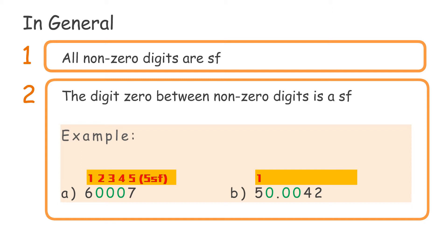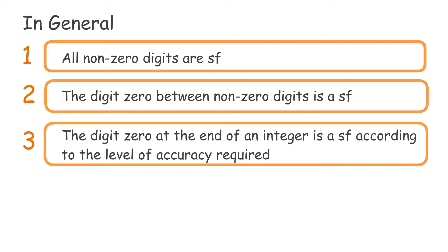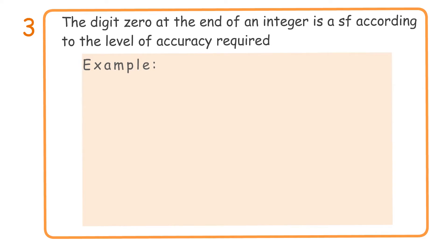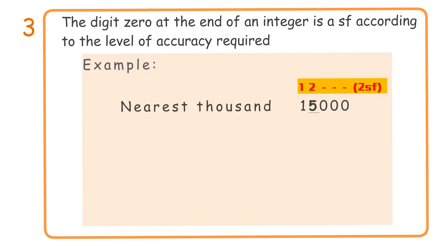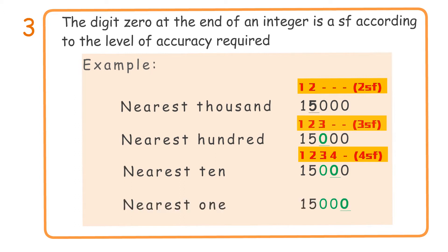Third, the digit zero at the end of an integer is a significant figure according to the level of accuracy required. Example: 15,000 — accuracy to nearest thousand gives 2 significant figures; nearest hundred gives 3 significant figures; nearest ten gives 4 significant figures; nearest one gives 5 significant figures.